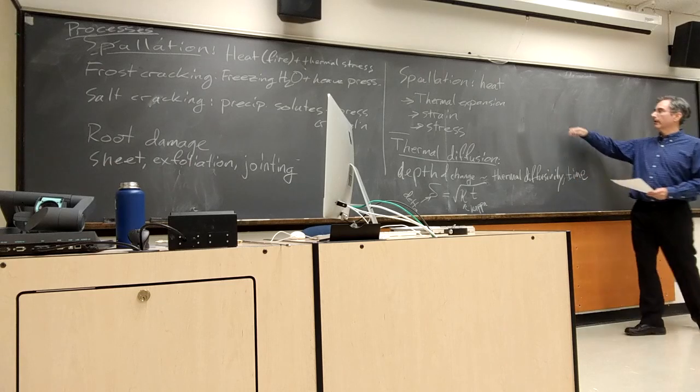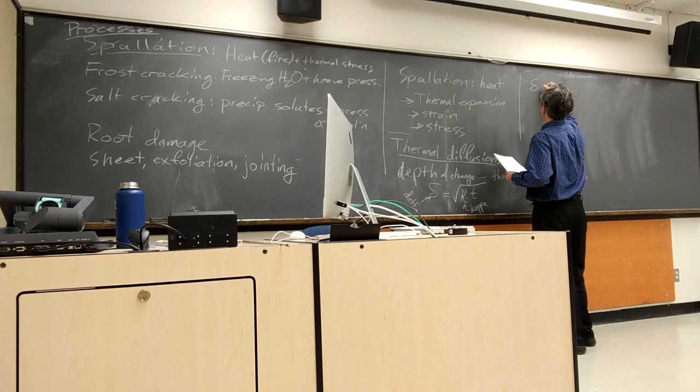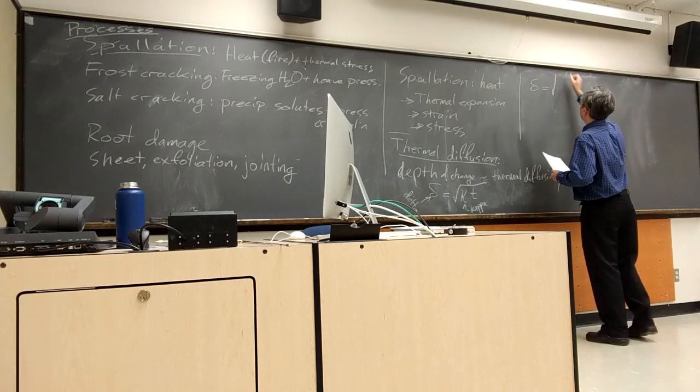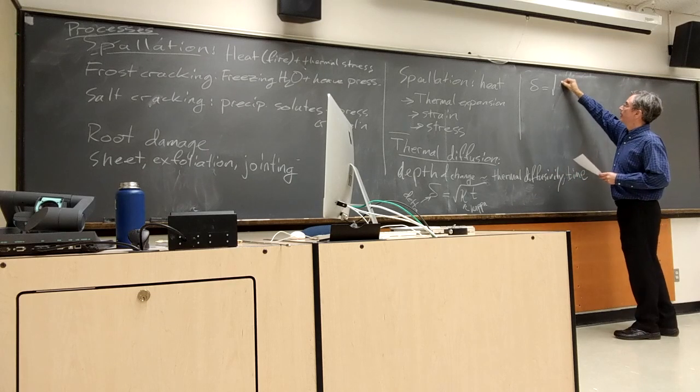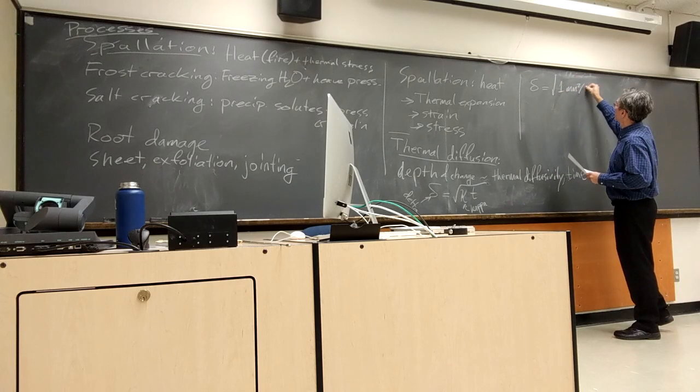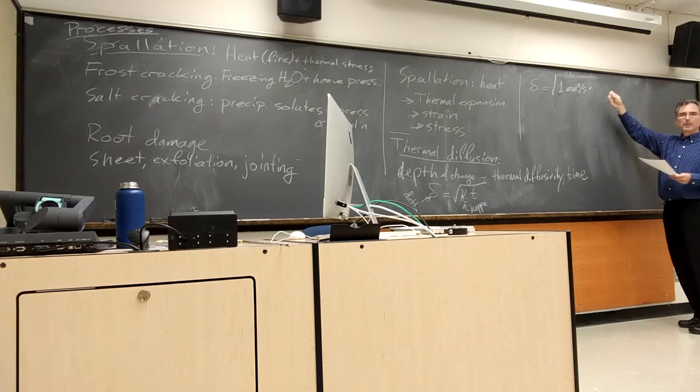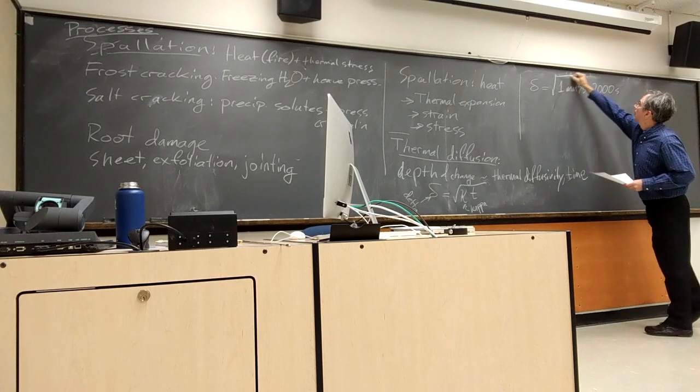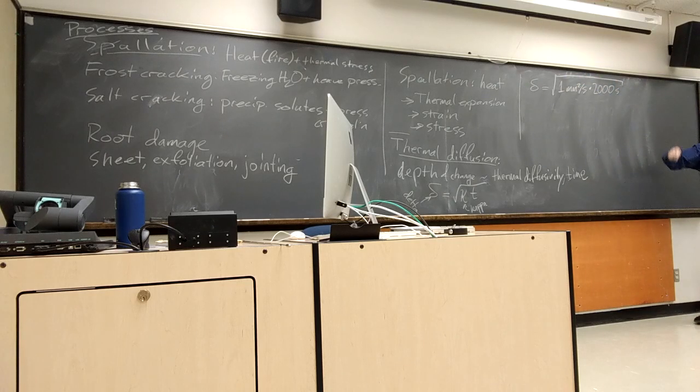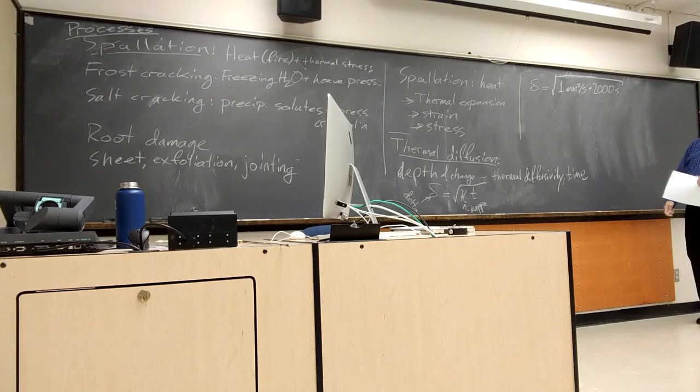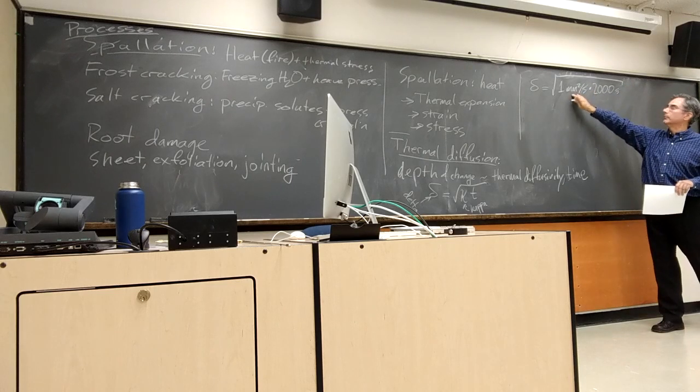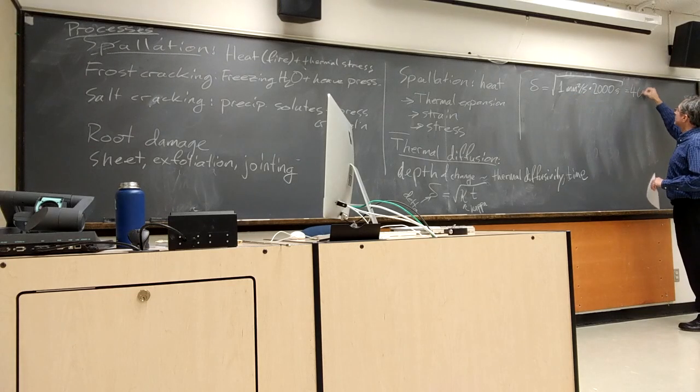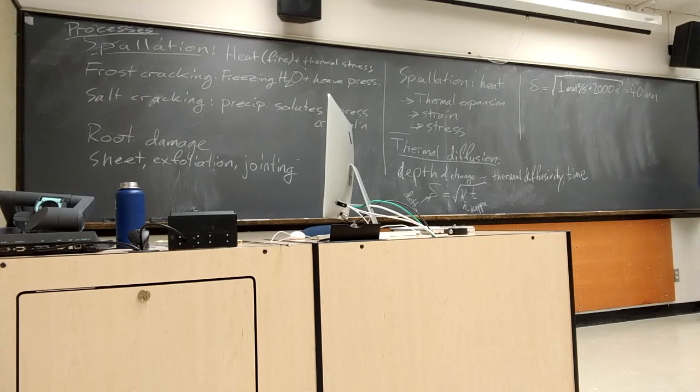So, for example, if I want to know if I've got a fire that lasts thirty minutes, and a thermal diffusivity of about one millimeter squared per second. Thirty minutes is about 2,000 seconds. Always include units in calculations, so you can see where they cancel, seconds cancel. I've got millimeters squared under the square root sign, that's going to give me millimeters out. That's 40 millimeters to one significant figure.